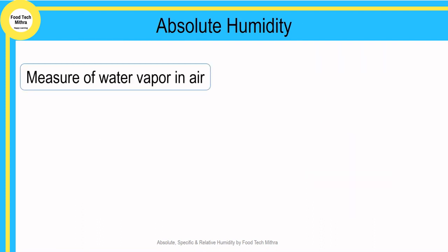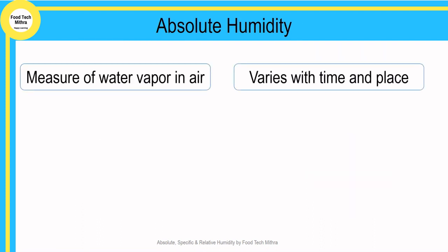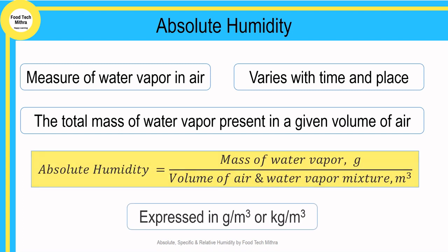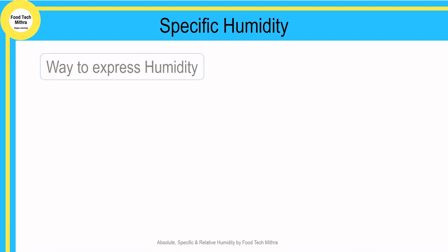Absolute humidity is the measure of water vapor in the air regardless of temperature, and it varies with time and place. Hence absolute humidity is not used in most calculations. Absolute humidity is equal to the mass of water vapor divided by the volume of the air and water vapor mixture.